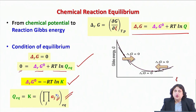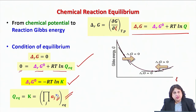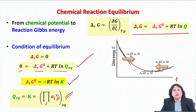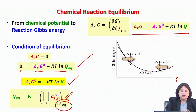If the j-th component is a product, ν_j is a positive quantity. If j is a reactant, then ν_j is a negative quantity. And a_j is the activity — a quantity related to the concentration of the j-th component of the reaction mixture at equilibrium.